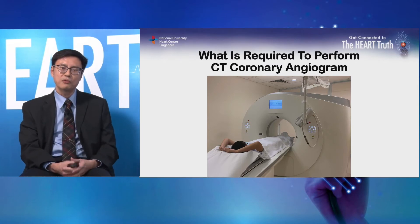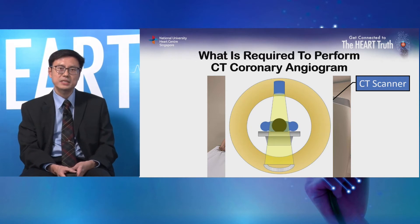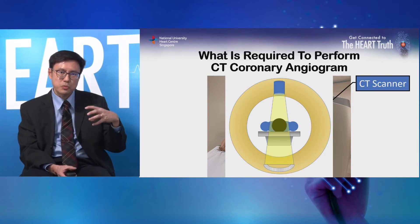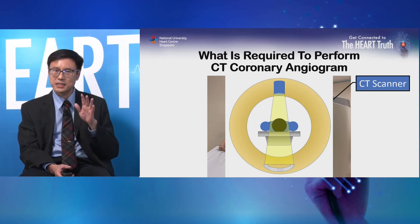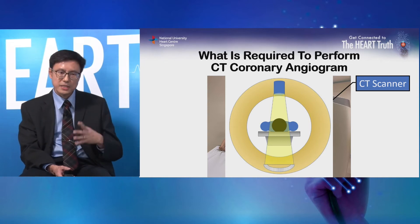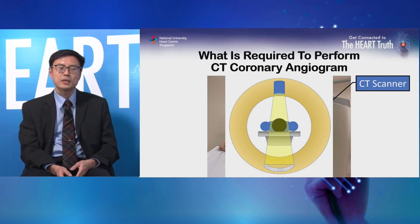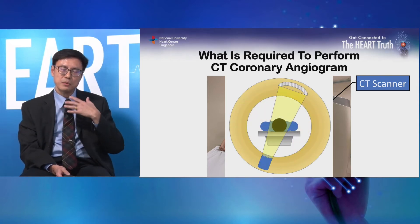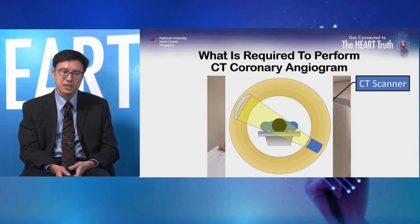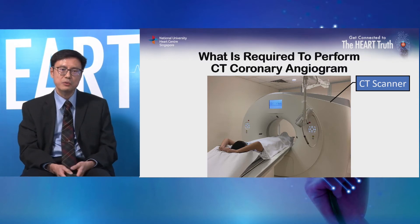For CT coronary angiogram, we need the scanner. The CT scanner is essentially an x-ray tube that sends x-rays through the body of the patient, who lies in the center of the scanner. These x-rays are detected by an array of detectors opposite the x-ray tube. As the body passes through the gantry, the tube rotates to take pictures of the region of interest — in our case, the heart. This is then processed by computers to give us the images we require.